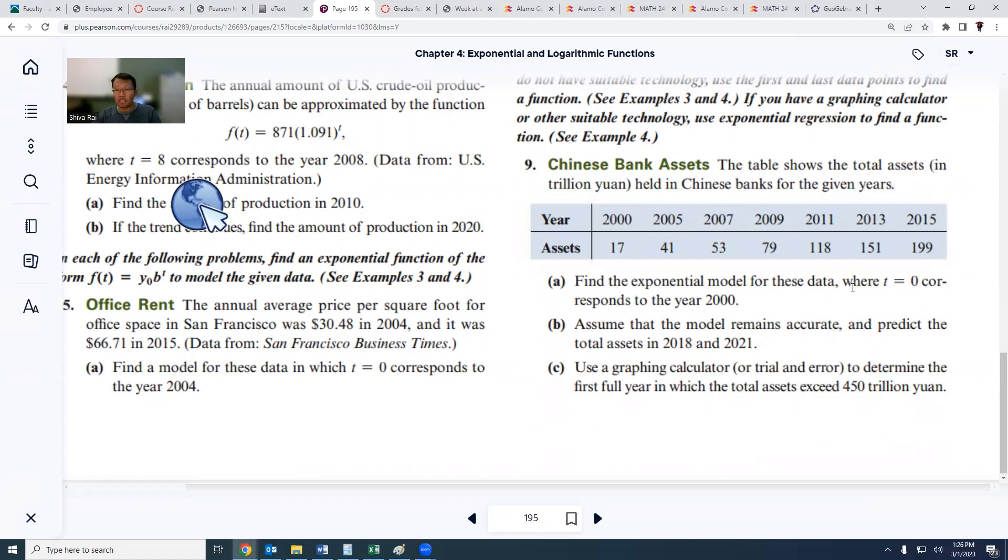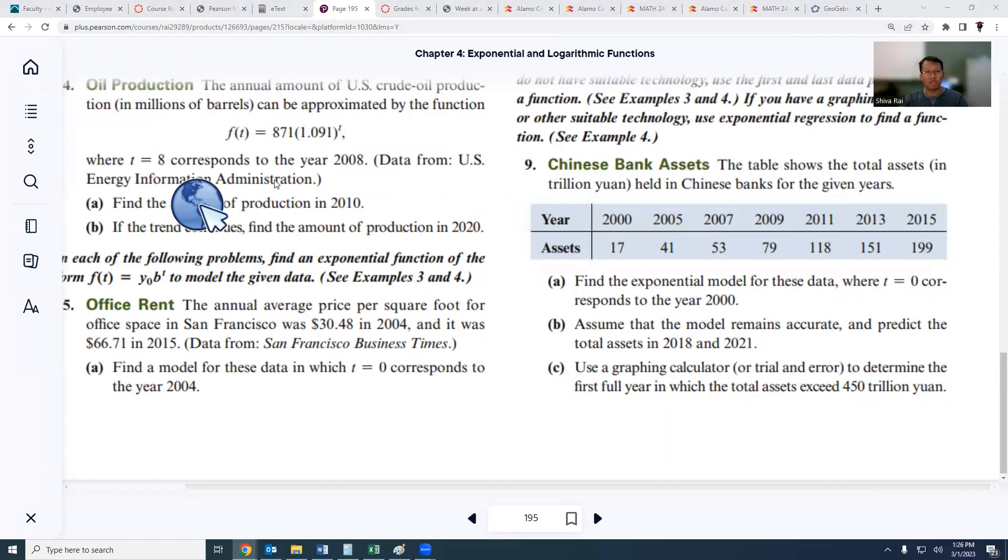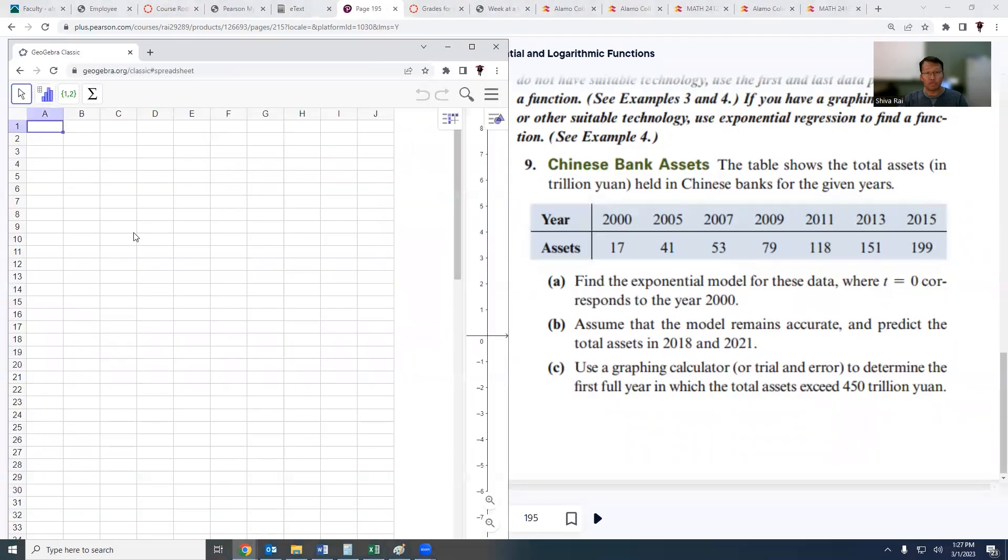Part a says find the exponential model for this data where t equals zero corresponds to the year 2000. Part b: assume the model remains accurate and predict the total assets in 2018 and 2021. Part c: use a graphing calculator or trial and error to determine the first full year in which the total assets exceed 450 trillion yuan. So let me go towards GeoGebra and this will help us model this data.